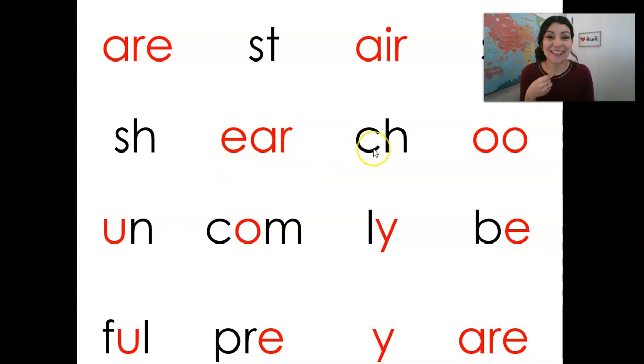Sound CH, sound air. Sound T, sound OO, or it makes another sound too, UH, look, good job. Sound UN, sound COME, sound LEE, sound BE, sound FULL, sound PRE, sound E, sound air, great job.